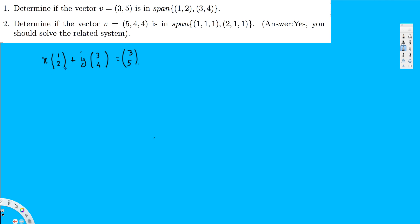To solve this, I first create the equations. Multiplying through gives the first equation: x + 3y = 3. The second equation, from the bottom components: 2x + 4y = 5. Now I can write this in matrix form: [1, 3 | 3] and [2, 4 | 5].